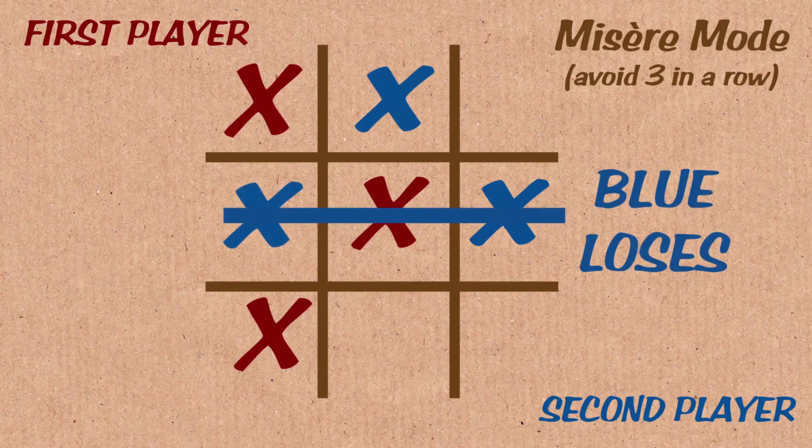If you're playing X only tic-tac-toe, where the person who makes three in a row loses, you definitely want to move in the center. And then after that, it's very simple. You just copy your opponent's move, moving a knight's move away. Done.